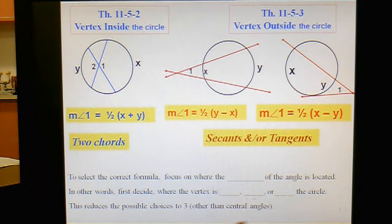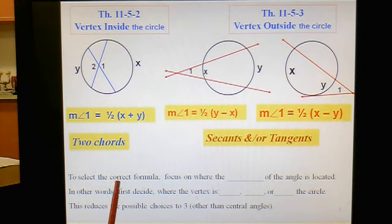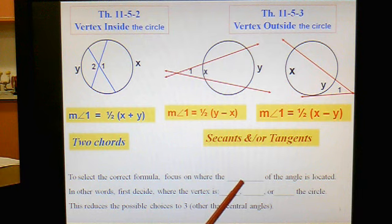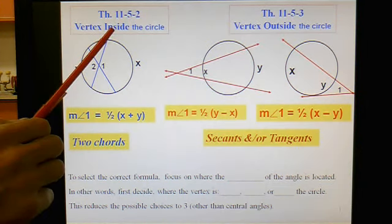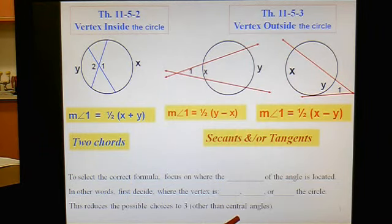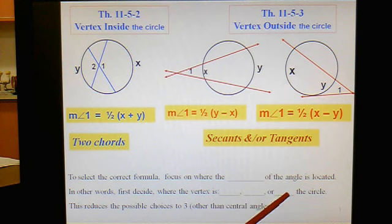So I've got a quick little summary paragraph at the bottom of your page there to select the correct formula. What you're focusing on is where is the vertex. That's why I have the word vertex in here. Is the vertex inside the circle? Is it outside of the circle? So I didn't give you a lot of room to write on your paper, but it's either inside the circle, it's outside the circle, or it could be on the edge of the circle, right on the circle. In, out, or on is the three choices.